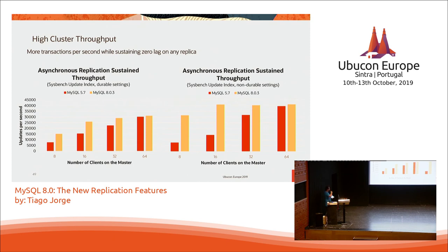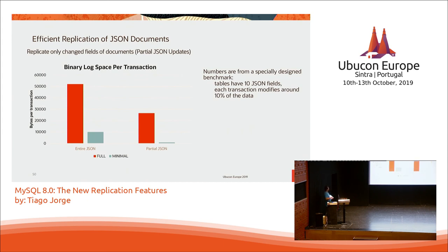Efficient replication of JSON documents: since 5.7 we've been able to have JSON in MySQL, but for replication it was treated like a blob. Now JSON is not a blob anymore — we're able to mine JSON documents and transfer only the bits and pieces that were changed, the same way row-based replication can transfer a full row snapshot or just the changed columns. Here we transfer only the changed parts of the JSON document.